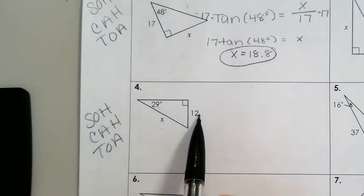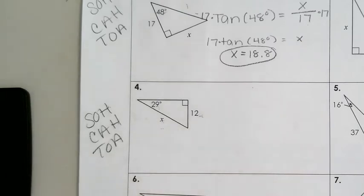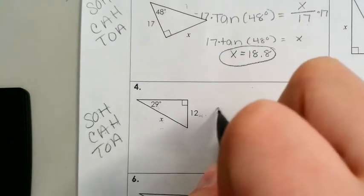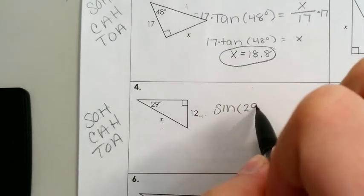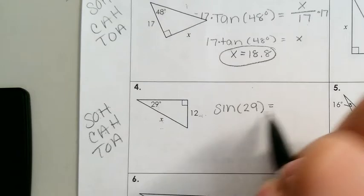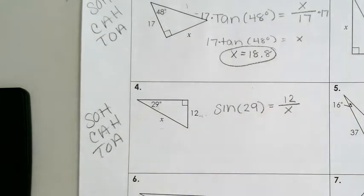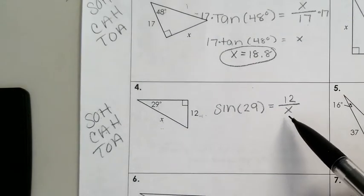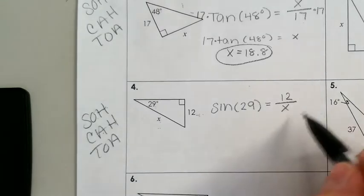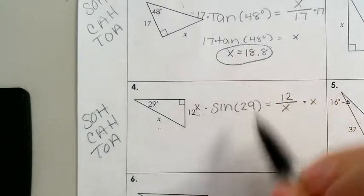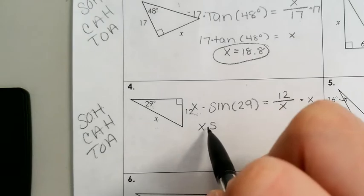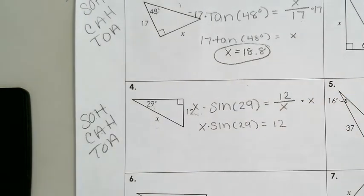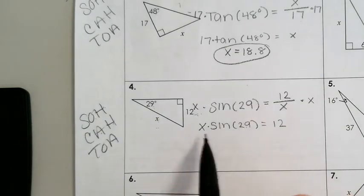Looking at this angle, what is this 12 leg identified as — is it adjacent or opposite? It's the opposite side. So we're going to use sine. Sine of 29 degrees is equal to opposite over hypotenuse. When we have our variable in the denominator, we multiply both sides by X. So X times sine of 29 is equal to 12.